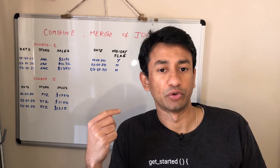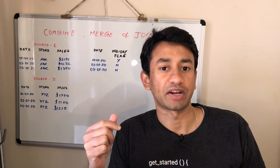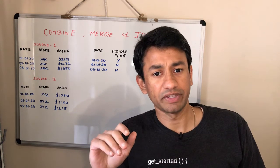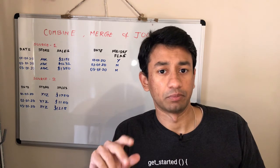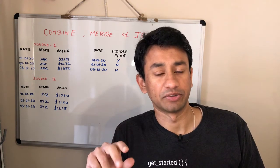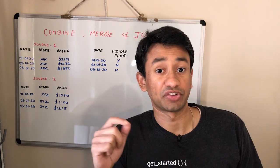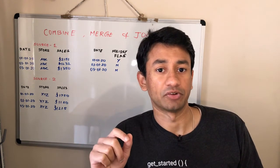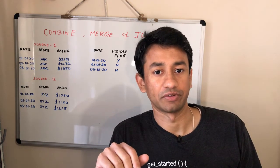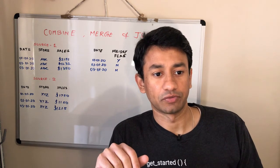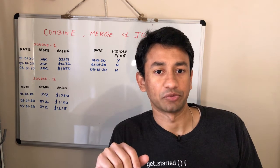The stat for today is: when there is a group of 23 people, there is a 50% probability for two people to have birthdays on the same day. Whereas when the group size increases to 70, the probability increases to 99%. That was something interesting I thought I would share with you. We will get into the tutorial video to see how to implement combine, merge, as well as join.